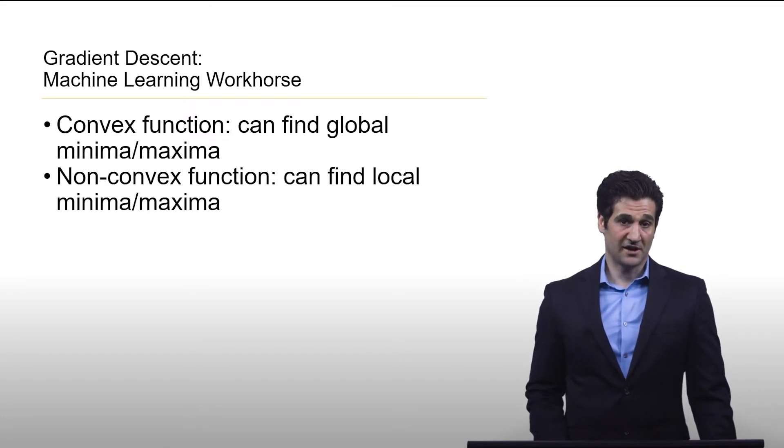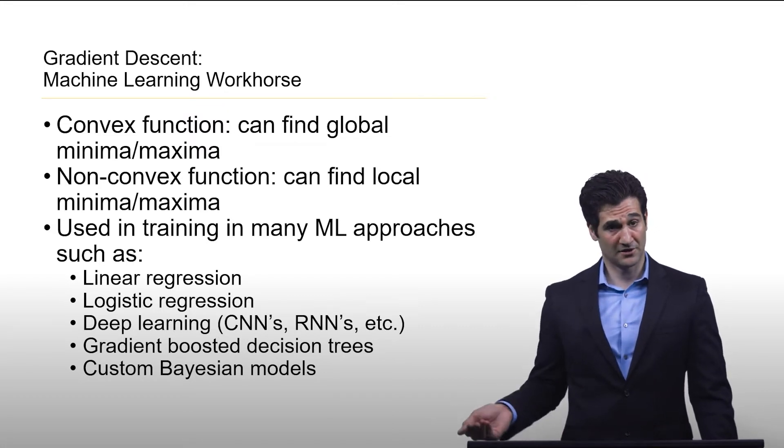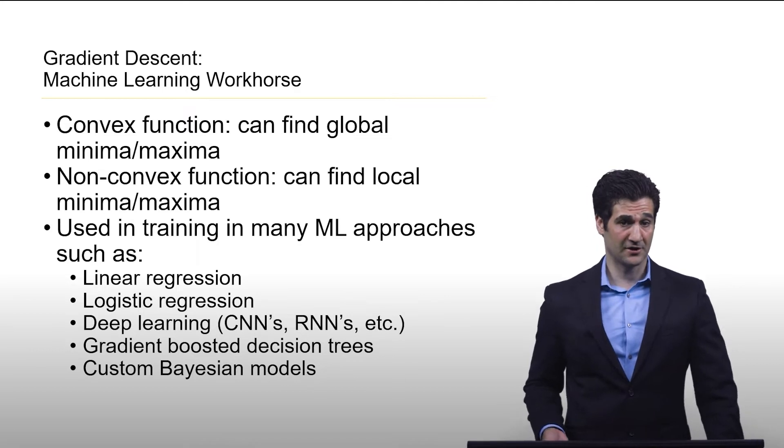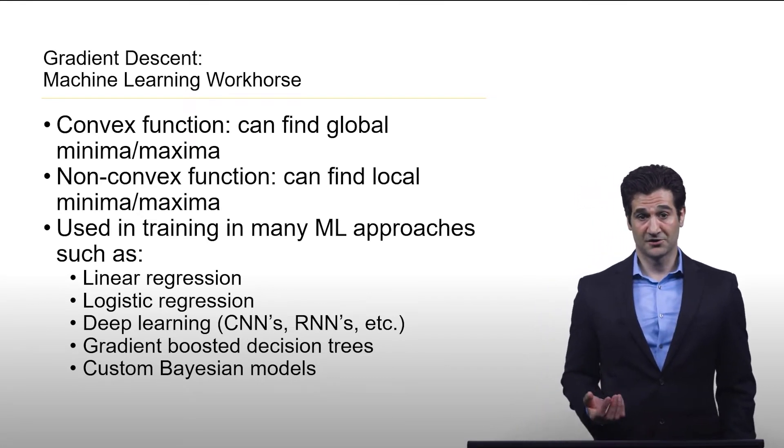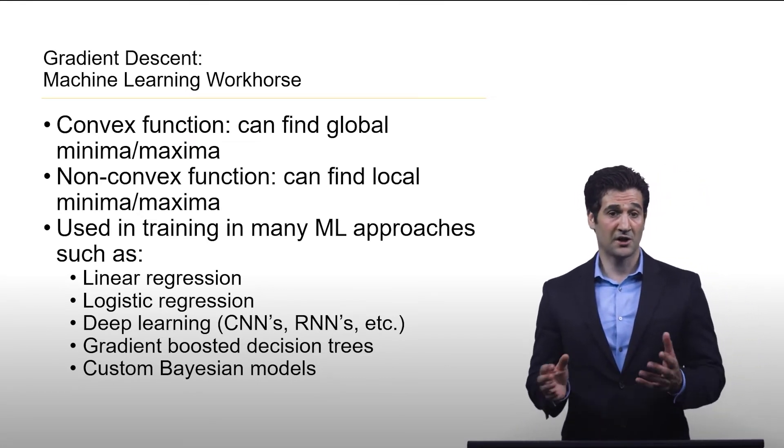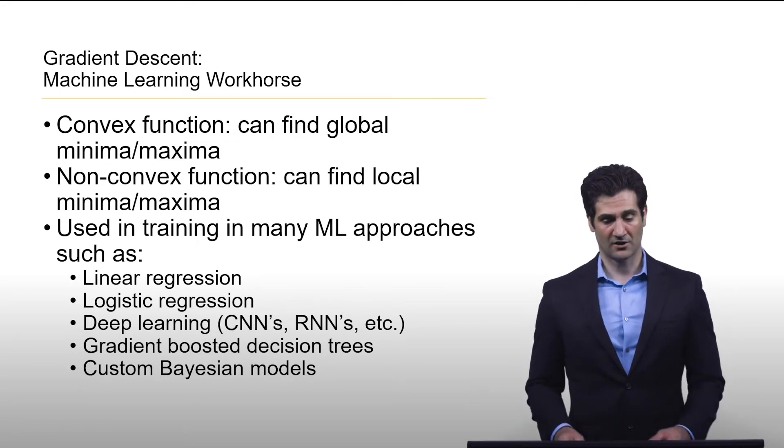If you have a non-convex function, this can find a local minima or maxima. It can be used more than just linear regression but logistic regression. It's highly used in deep learning. It can be used for gradient boosted variants of other algorithms such as decision trees and also for customized probabilistic models through the use of a log likelihood.